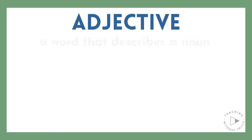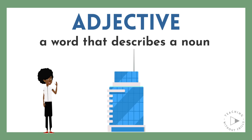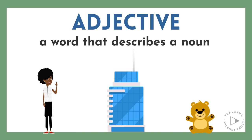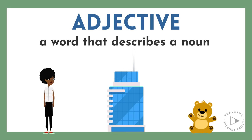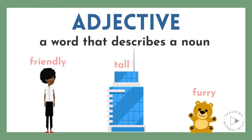An adjective is a word that describes a noun. A noun is a person, place, or thing. Adjectives tell details about nouns, like a friendly woman, a tall building, a furry bear. Friendly, tall, and furry are all adjectives.